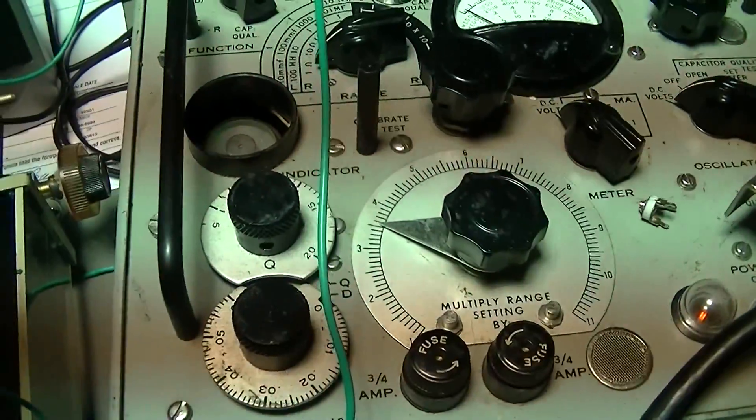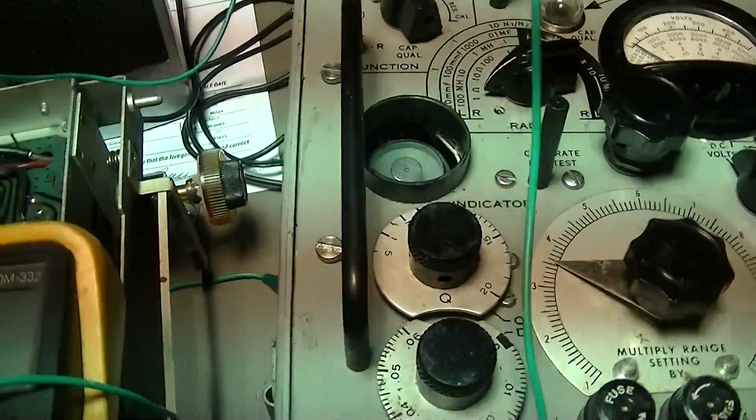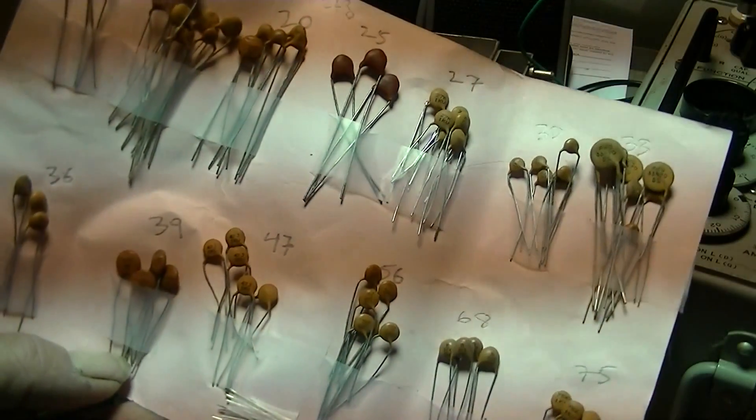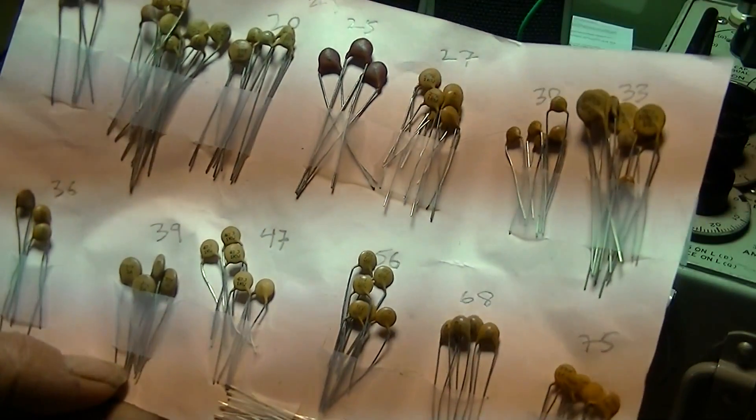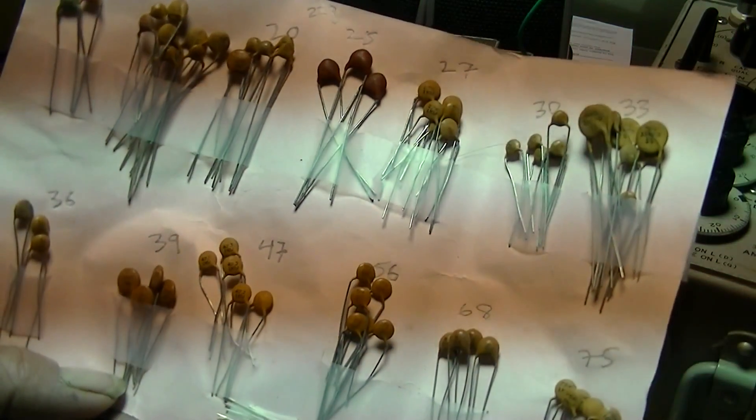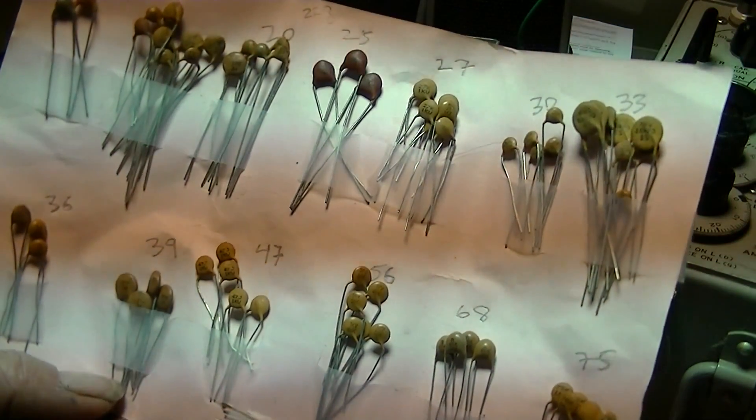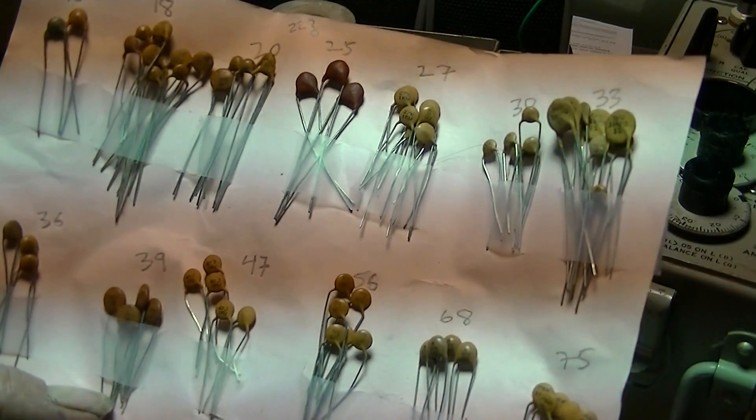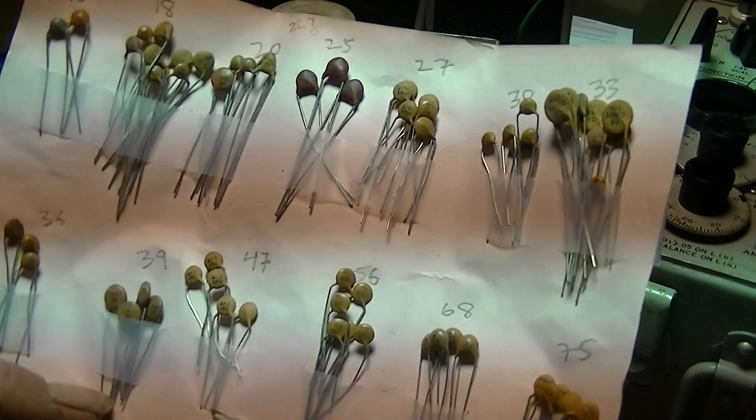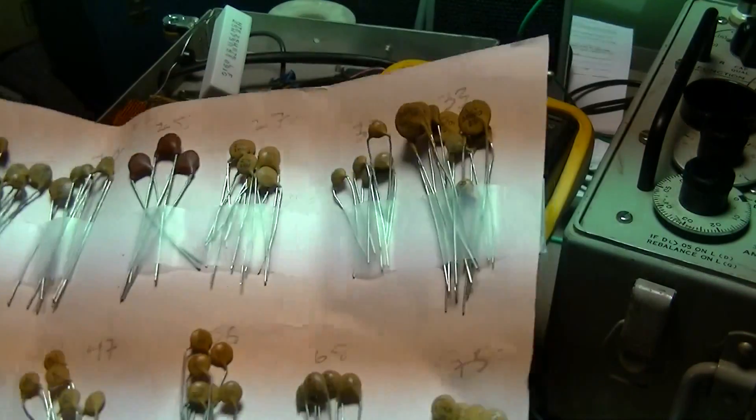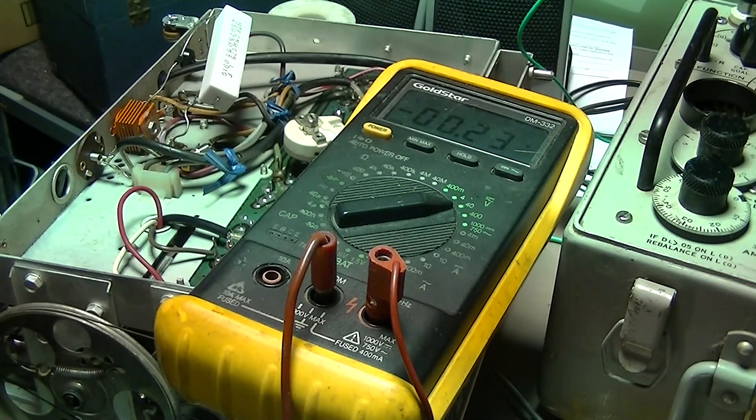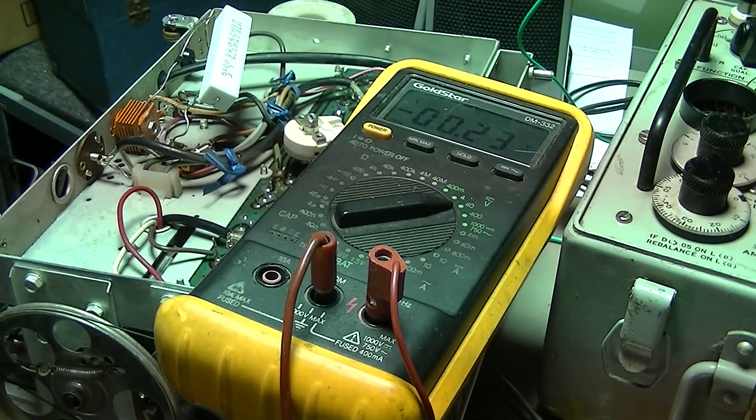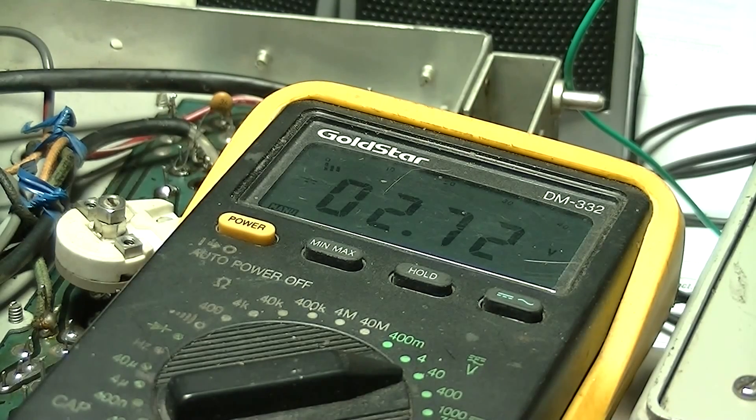And as seen in the previous video, I grabbed these. These are NPOs. Still think we probably need to do one percenters if I can find them in here. But we got basically 12, 18, 20, 25, 27, 30, 33, 36, 39. So I said 36. So we'll start with a 36 and we'll see what happens there.